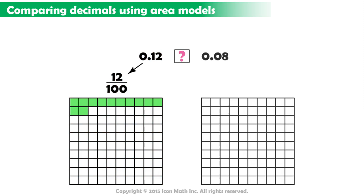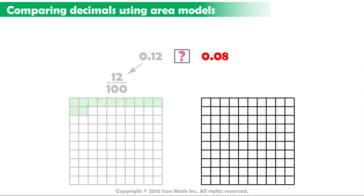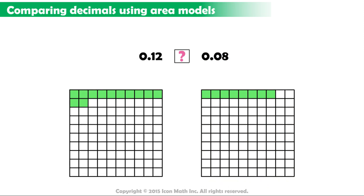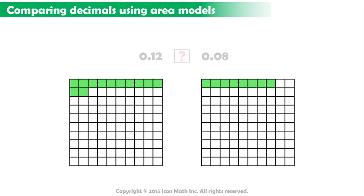And for the second decimal number, eight hundredths, we will shade eight small parts because the number eight hundredths represents eight parts out of a total of one hundred. Now, look at the area models. What do you see?